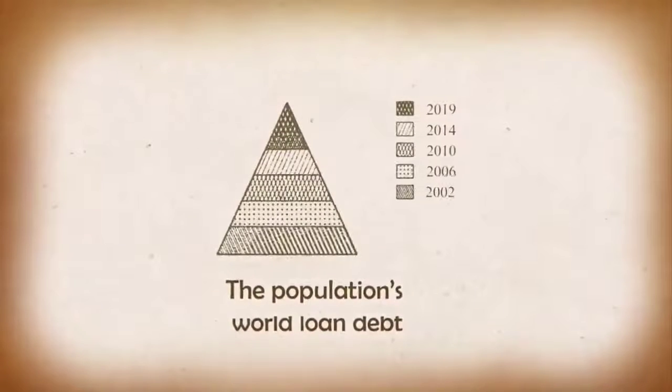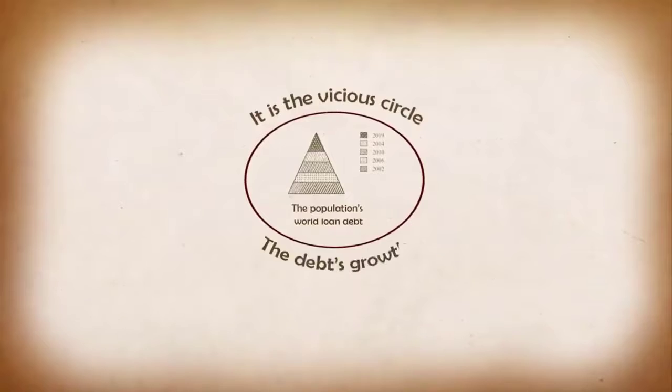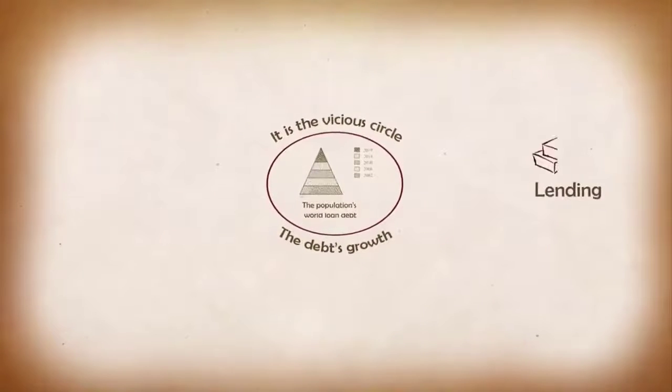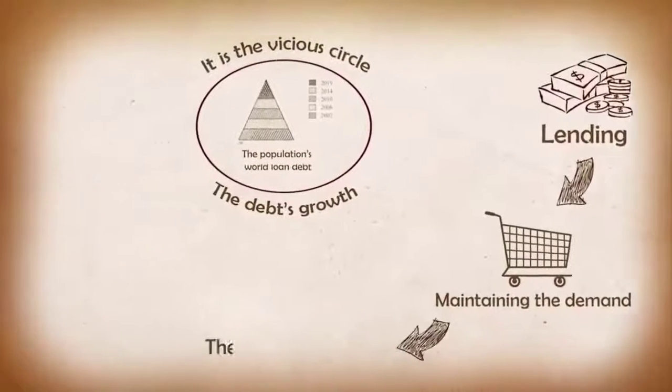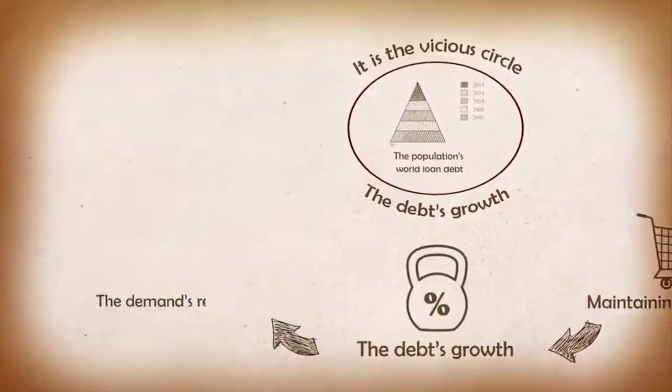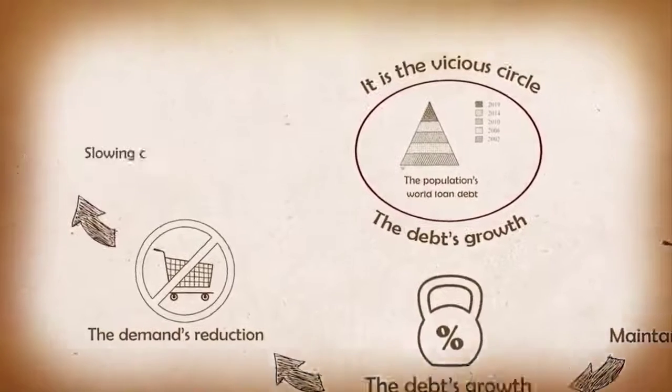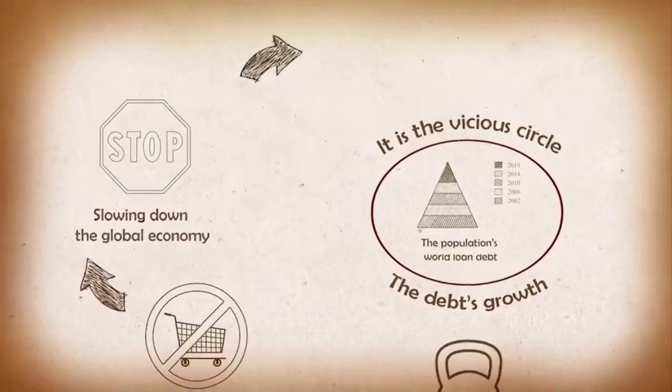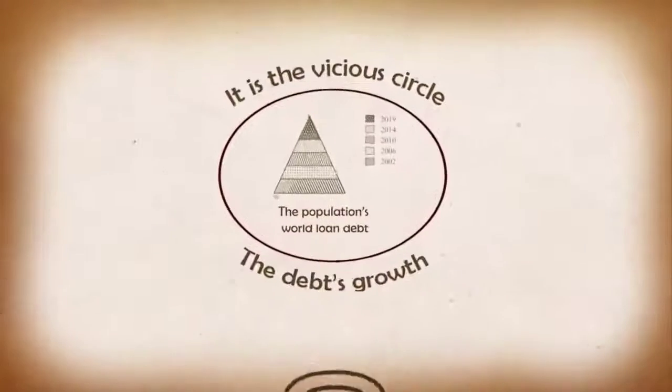This has led mankind to a vicious circle. Banks are forced to issue loans to maintain demand, but debt growth in the long run leads to a decrease in demand and consequently to a slowdown in world economic growth, a decrease in production. As a result, fewer and fewer people in the world will be able to repay the debts on loans.